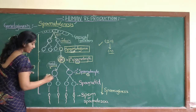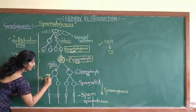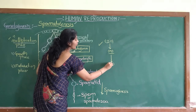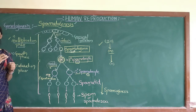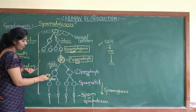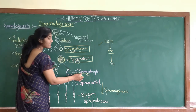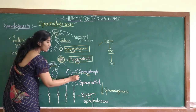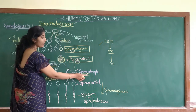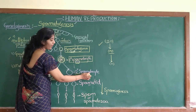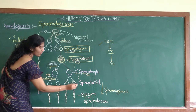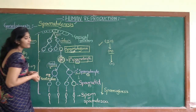The second meiotic division is an equational division, meaning the haploid remains haploid — the number of chromosomes is not reduced; it is maintained the same. Remember: meiosis 2, the second division of the secondary spermatocyte, is not reductional but equational. From primary to secondary spermatocyte it is reductional (2n to n), but in the second division the secondary spermatocyte divides in an equational manner. The resulting cells are also haploid and are called spermatids.